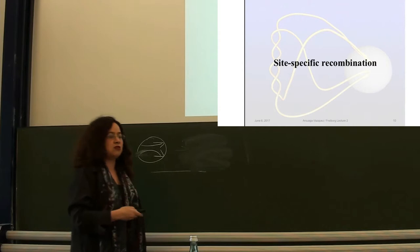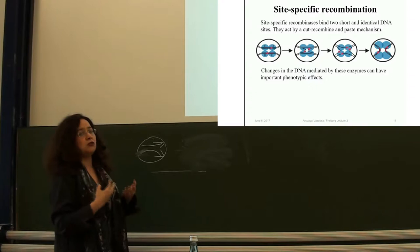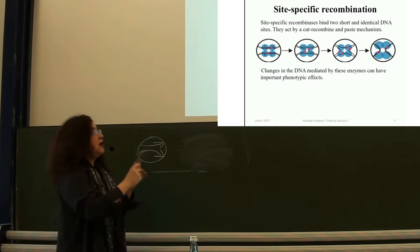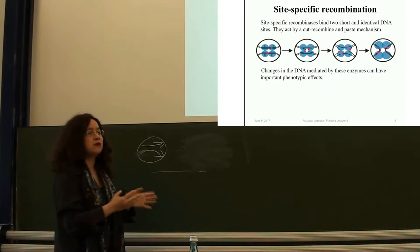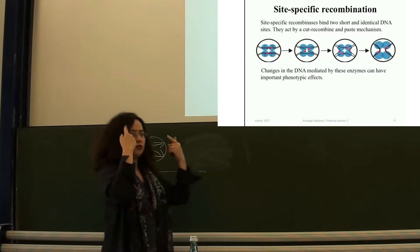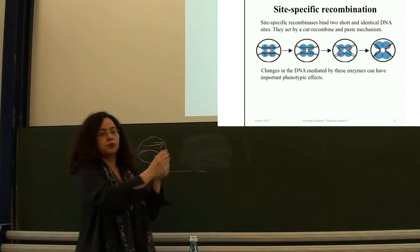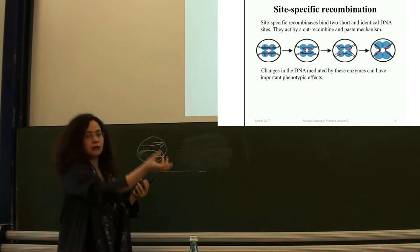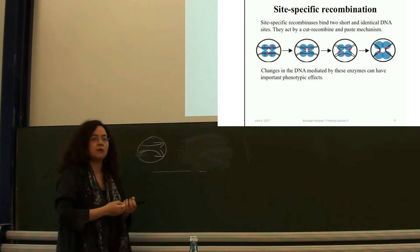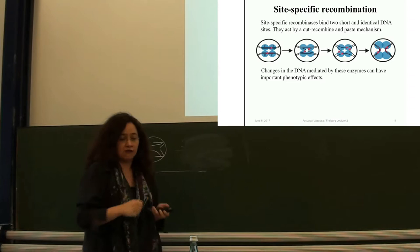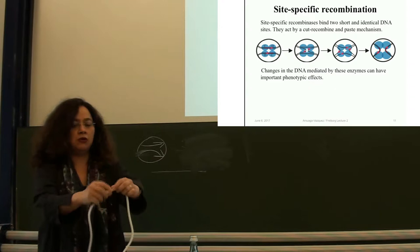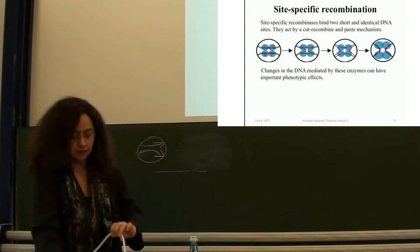Site-specific recombinases are enzymes that bind two pieces of DNA that are identical at the sequence level. These sequences range between 5 and 50 base pairs long. In physics terms, that corresponds to a very stiff piece of rod — you need 300 base pairs to go and come back, that's the Kuhn length of DNA. So if you're in the range of 30 base pairs, this is very stiff. It's like taking this piece of extension cord — I can't really do much with it. That's important to remember when we're doing the modeling.